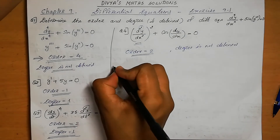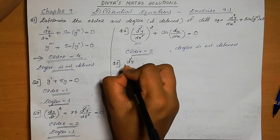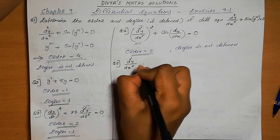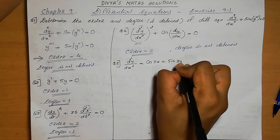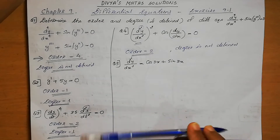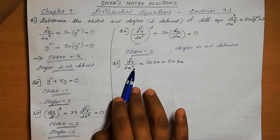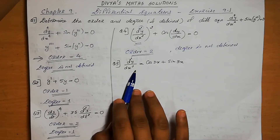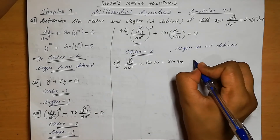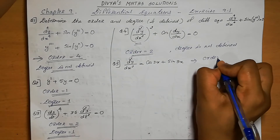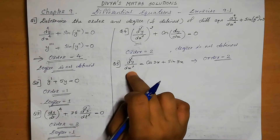Question number 5: d²y/dx² = cos 3x + sin 3x. Here, d²y/dx² is the only derivative present and it is the highest order derivative. So the order is equal to 2.